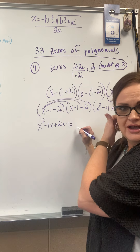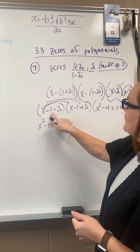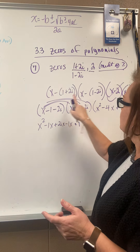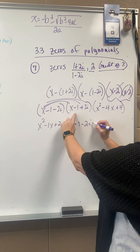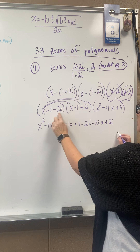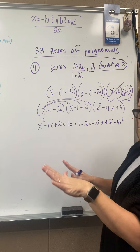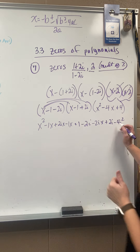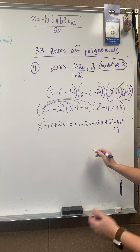It's easy to lose your spot and I know I can make mistakes, so please let me know if you catch one. So minus 1 times x, then distributing minus 1 times minus 1 is plus 1, and negative 1 times positive makes negative 2i. Now distributing negative 2i times x, negative 2i times negative 1, and negative 2i times positive 2i is minus 4i squared. There should be 9 terms — 3 terms times 3 terms all multiplied out. Negative 4i squared becomes just a plus 4.